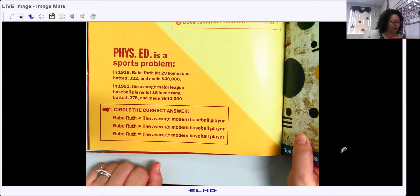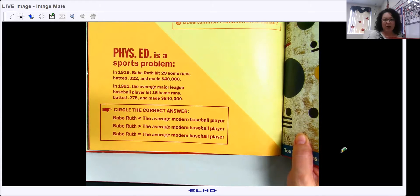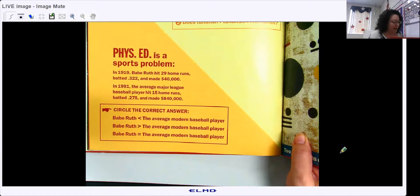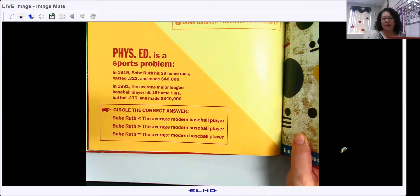Circle the correct answer. Babe Ruth makes less than the average modern baseball player. Babe Ruth makes more or greater than the average baseball player. Babe Ruth makes the equal amount. Everything is a math problem.